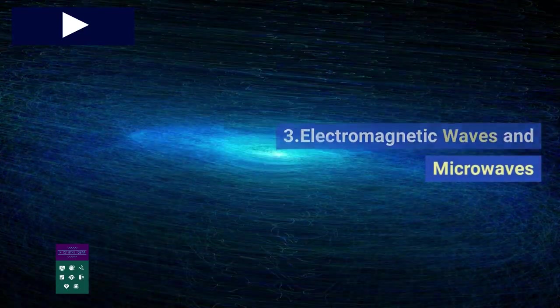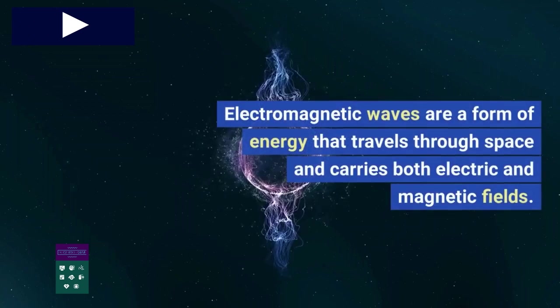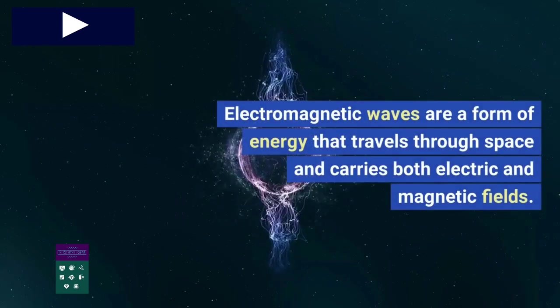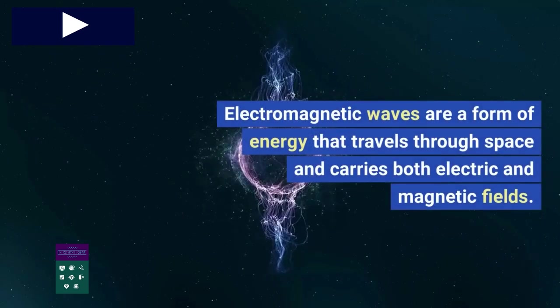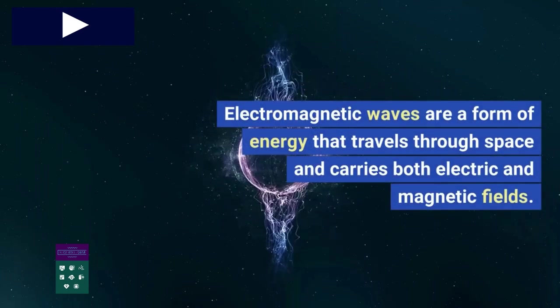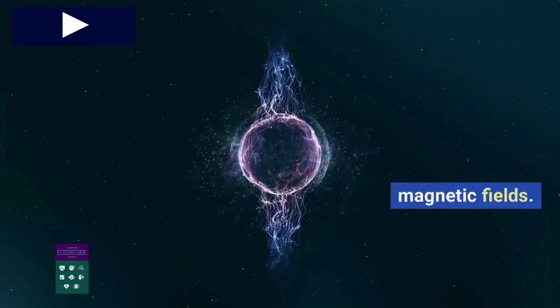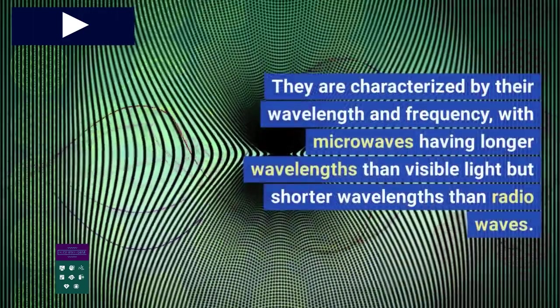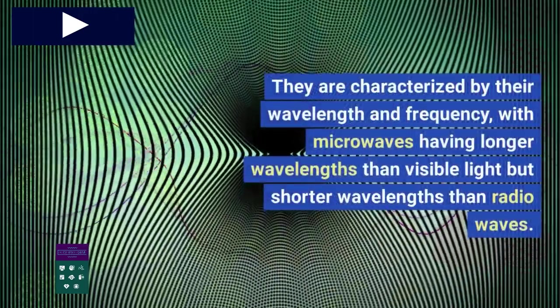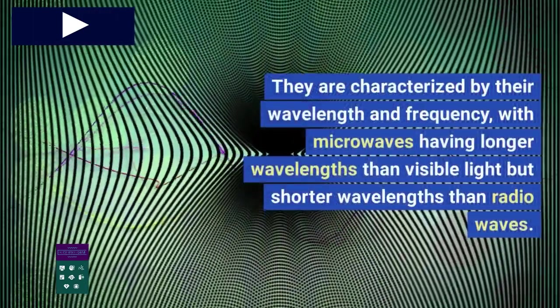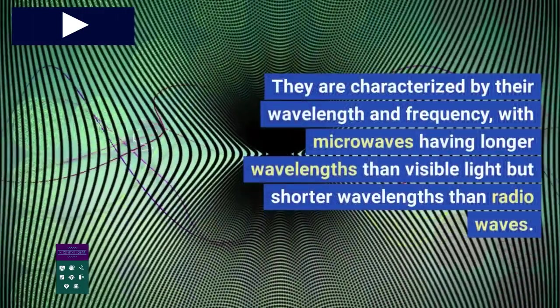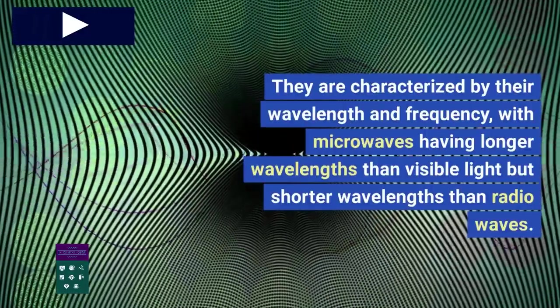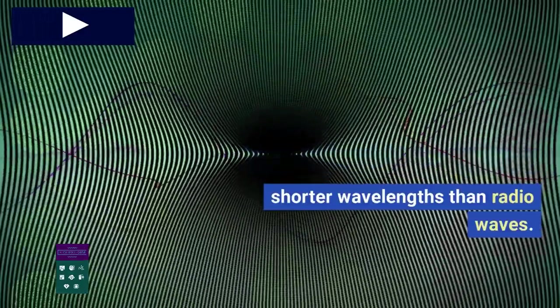Electromagnetic waves are a form of energy that travels through space and carries both electric and magnetic fields. They are characterized by their wavelength and frequency, with microwaves having longer wavelengths than visible light but shorter wavelengths than radio waves.